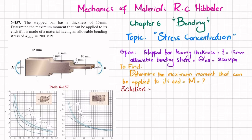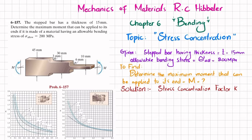There are two fillets on this step bar, so there will be two stress concentration factors K to find. Let's find the stress concentration factor K for both fillets. Starting with the smaller section — this is the smaller section.